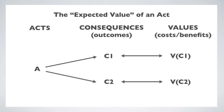Schematically, we have a picture that looks like this. We have an act, represented by the letter A, and in this case we're assuming the act has only two possible outcomes, which we're calling C1 and C2. Each of these has a utility or value associated with it, which we can write as V as a function of C1 or C2. These could be anything. The act could be: buy a lottery ticket, or bring an umbrella to the picnic, or open a small business, or ask my partner to marry me.